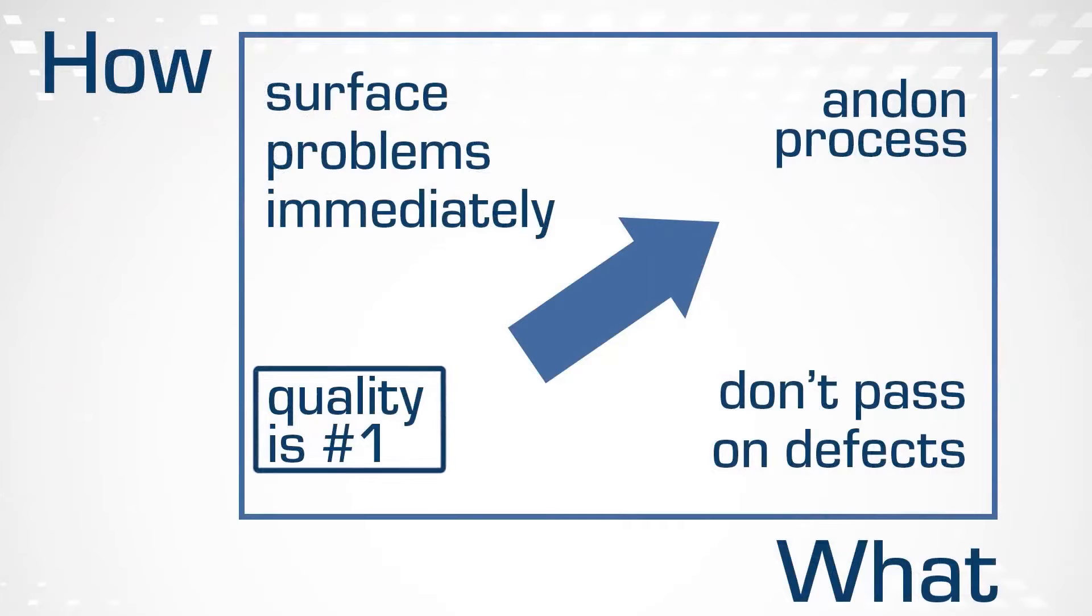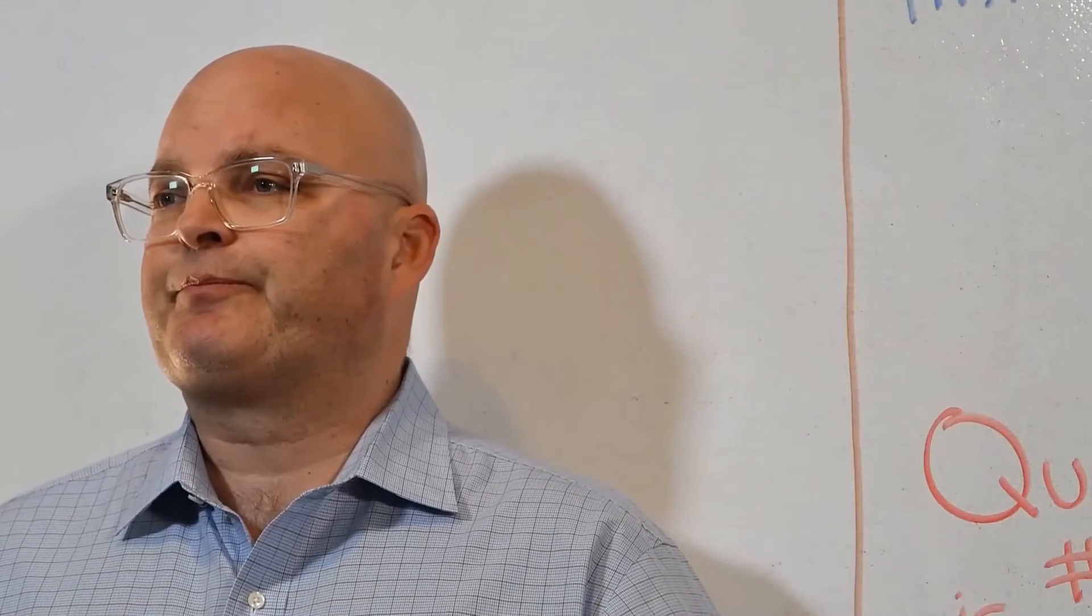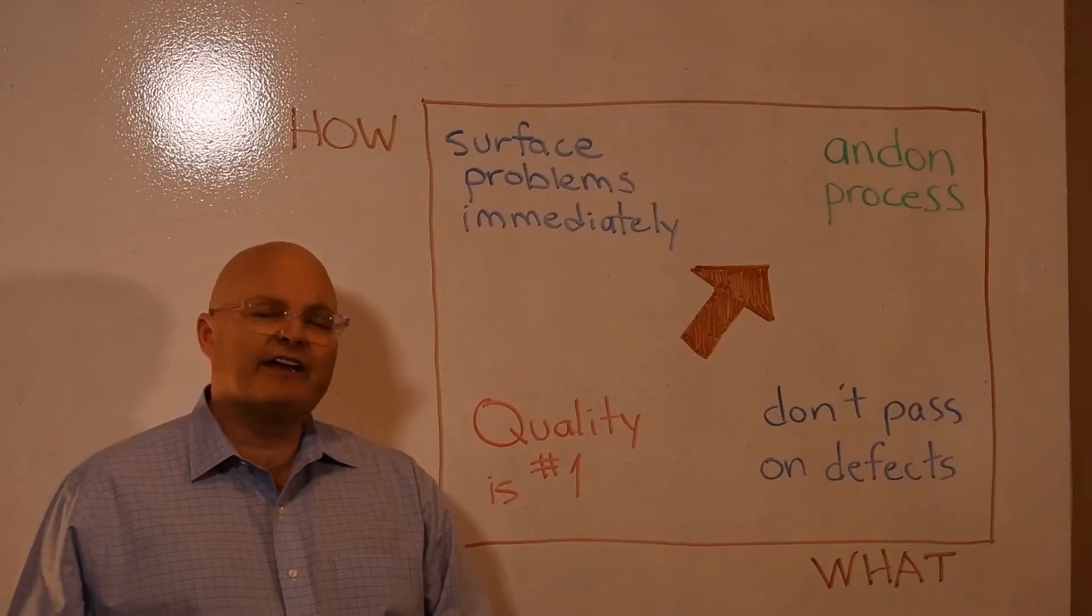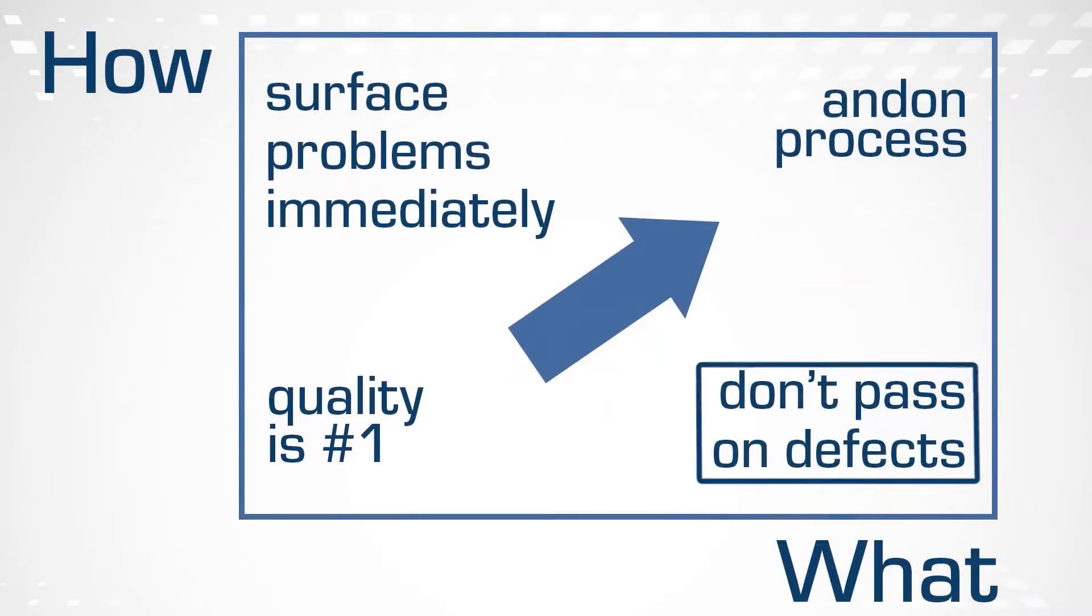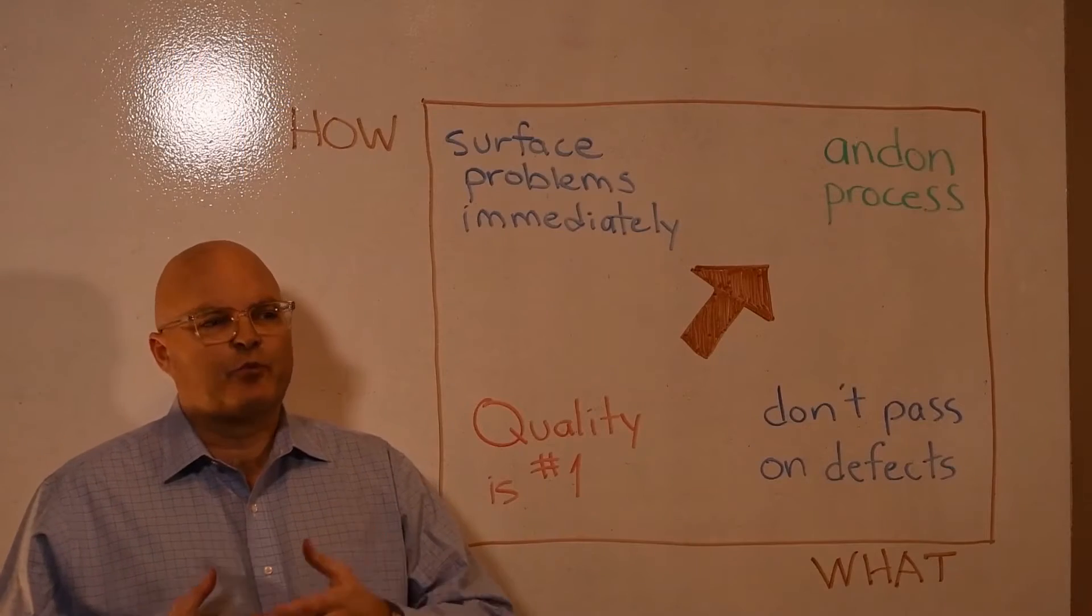We might say quality is number one, but that doesn't help anybody. It certainly doesn't allow us to achieve that result. If we focus on a high agreement of what, we might make a statement like don't pass on defects. That makes it clear what we're trying to accomplish - we don't want defects to move from one stage of work to the next.